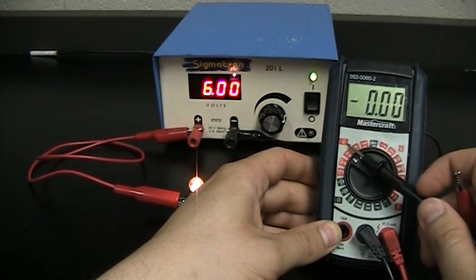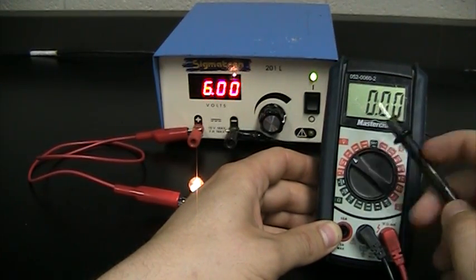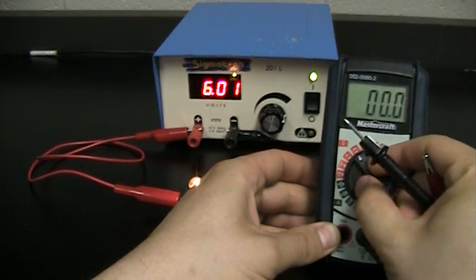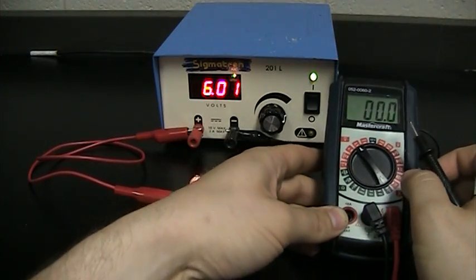We're going to be wanting to put our dial over to this side and whether you stick it on the 20 or 200 it makes little difference except for how many decimal places that you get. So we'll just leave it right there.